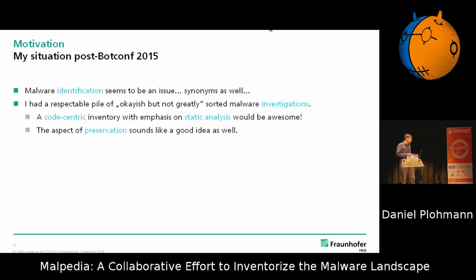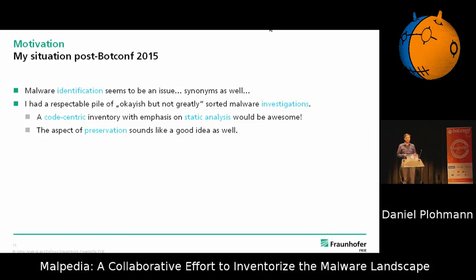Another thing I learned from DGArchive is that we as a malware research community should definitely start thinking about preservation. When I tried to recover as many DGAs as possible, I ran into stuff like Xenovol or TDSS that were active around 2008 to 2011. It's very hard to find samples for those families by today's standards — even if they're somewhere in the depths of VirusTotal, it's hard to find the exact samples that contain the DGA code. So having this archived repository of malware families might be a good idea from that perspective as well.